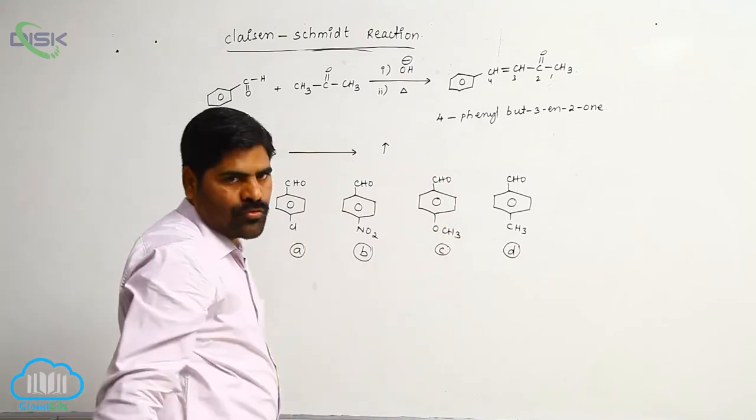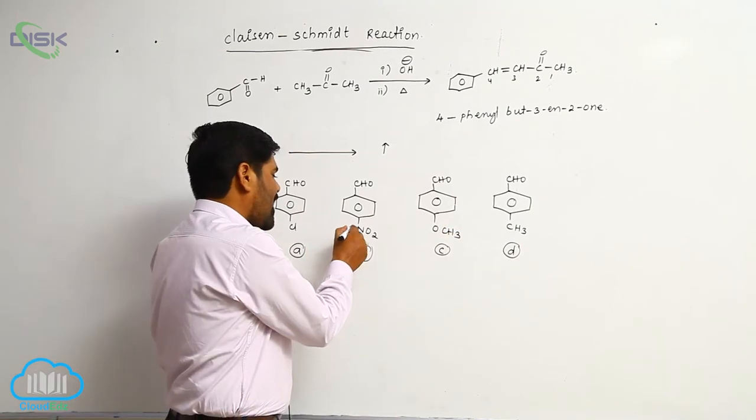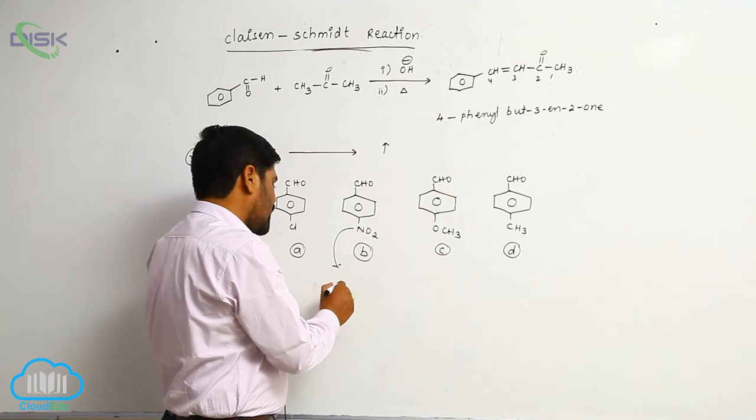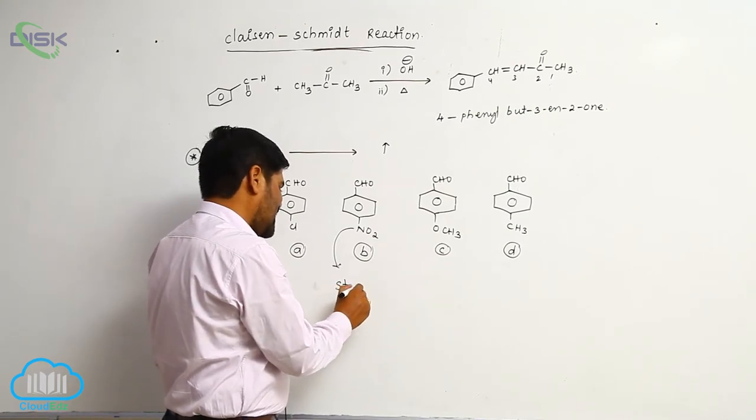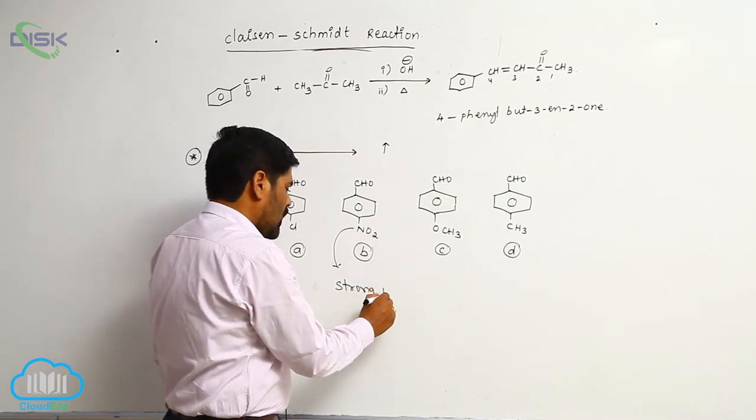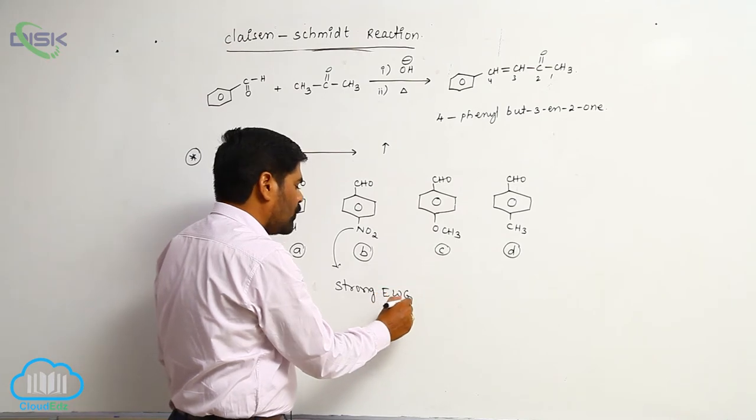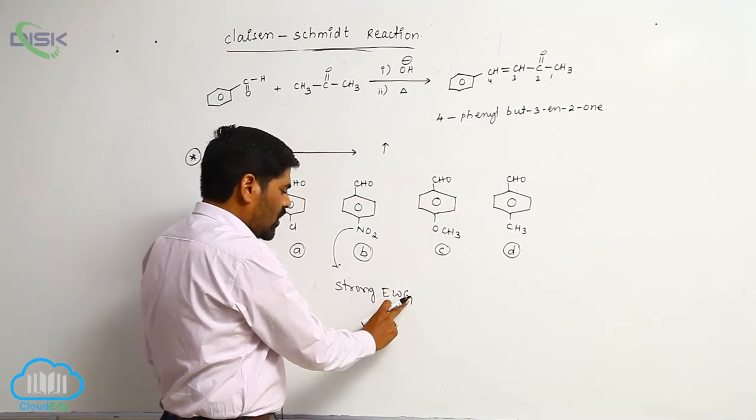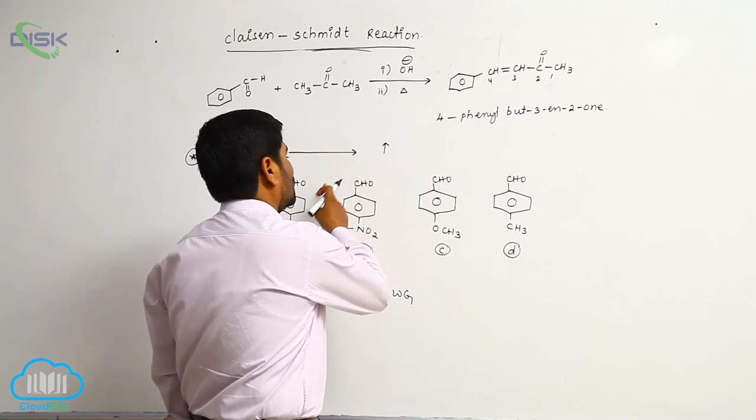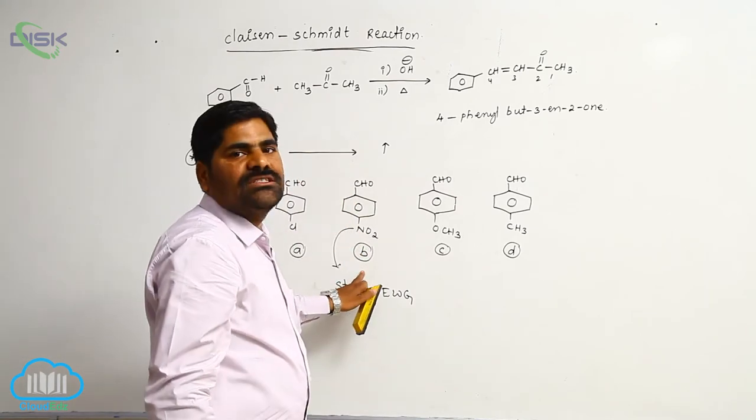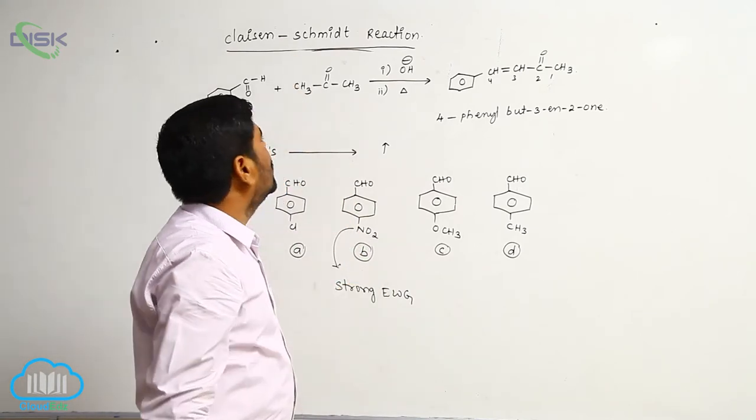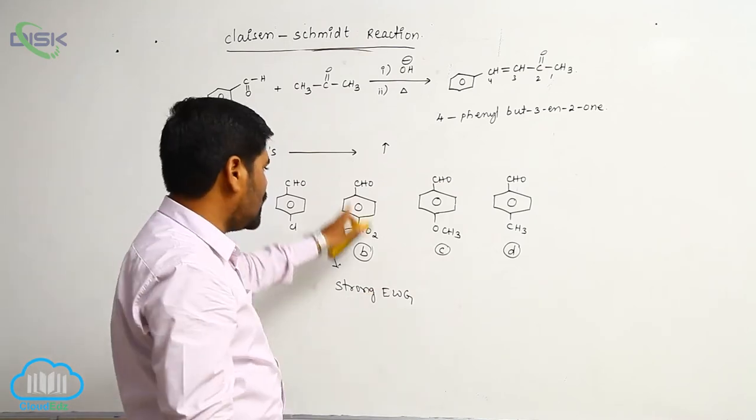Among these four compounds, the nitro group acts as a strong electron withdrawing group. That is the reason why compound B is more reactive towards Claisen-Schmidt reaction.